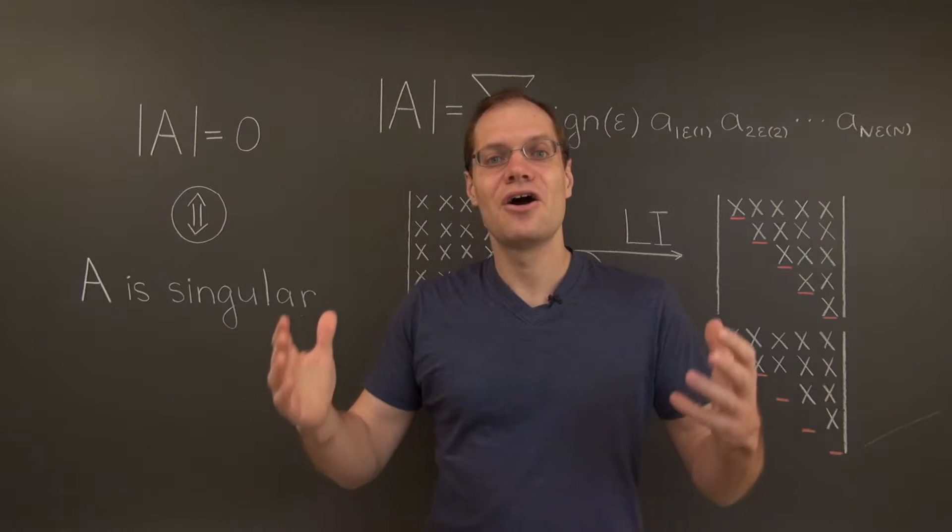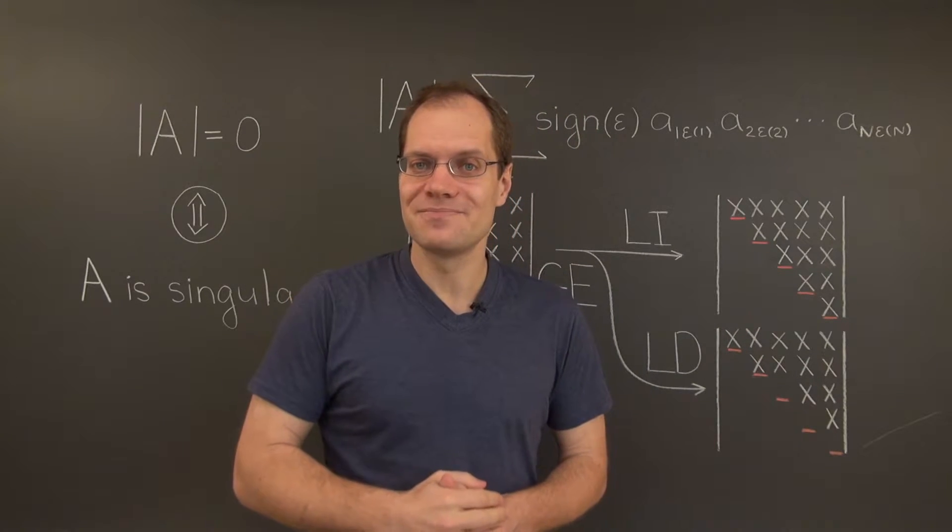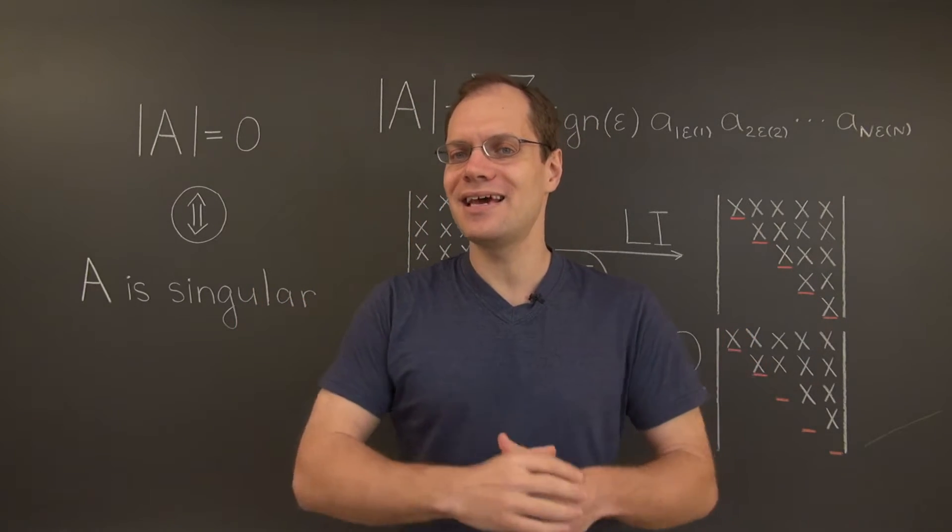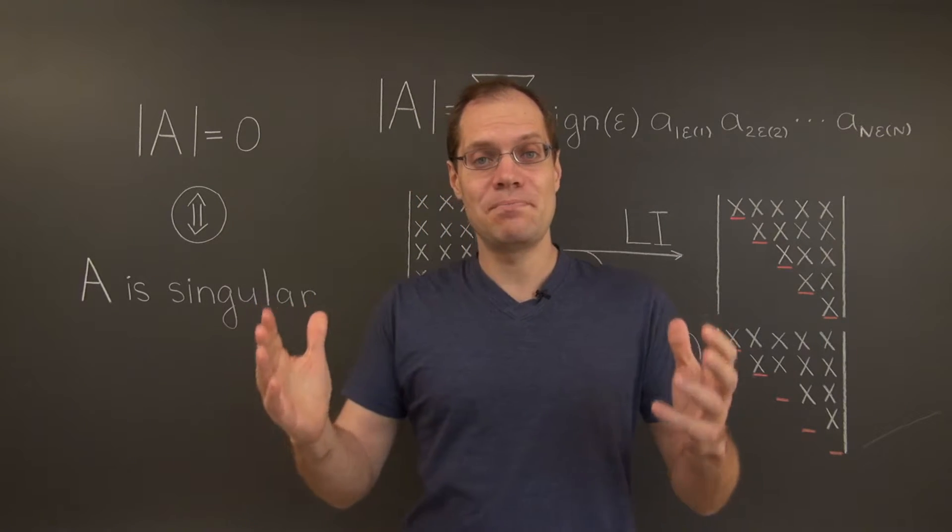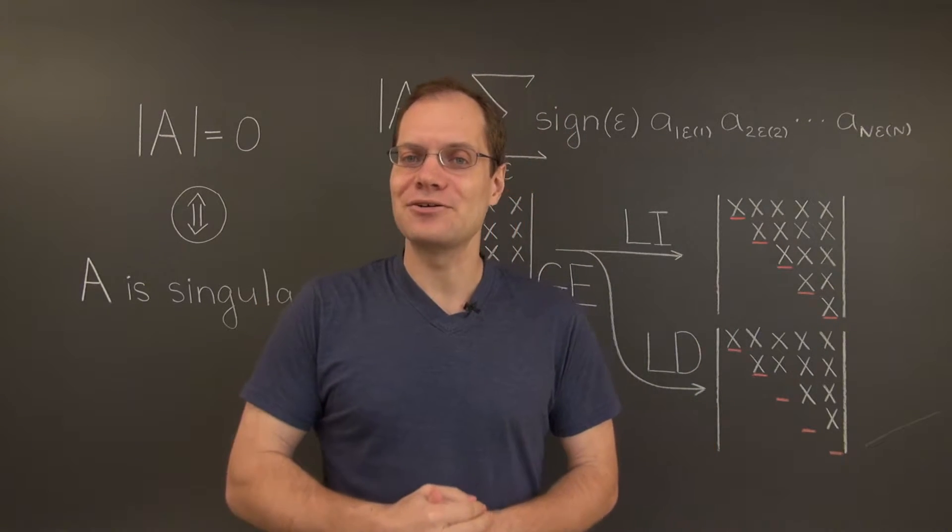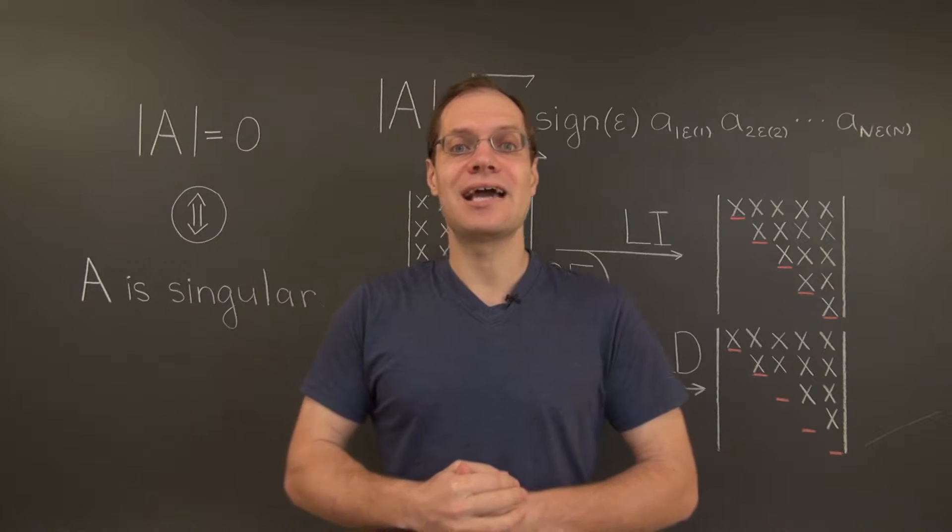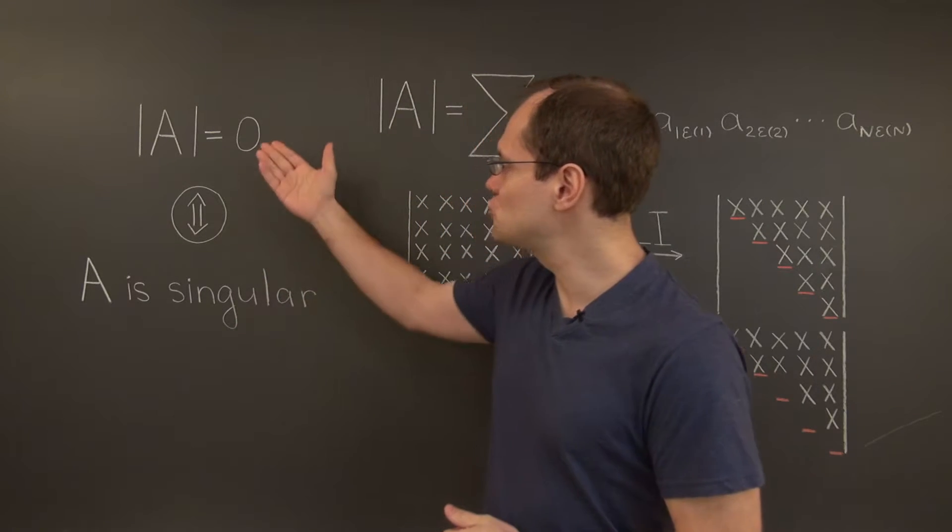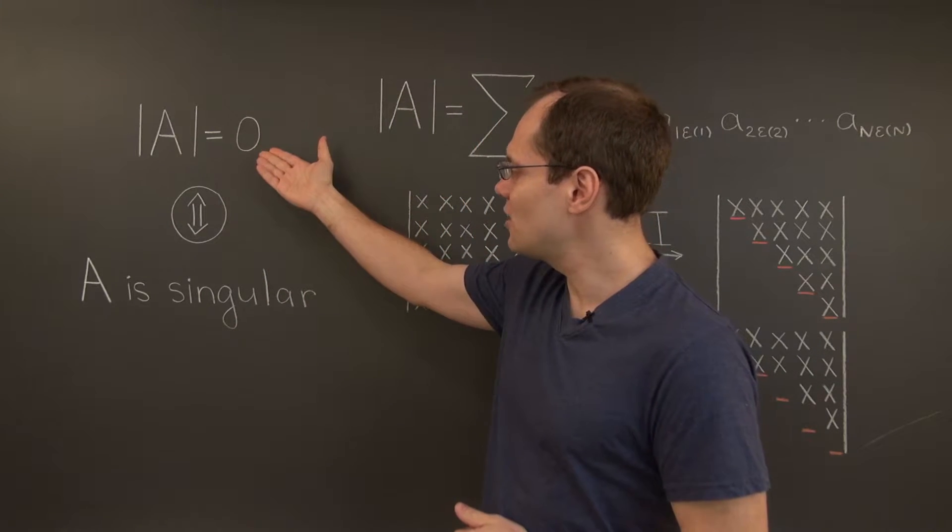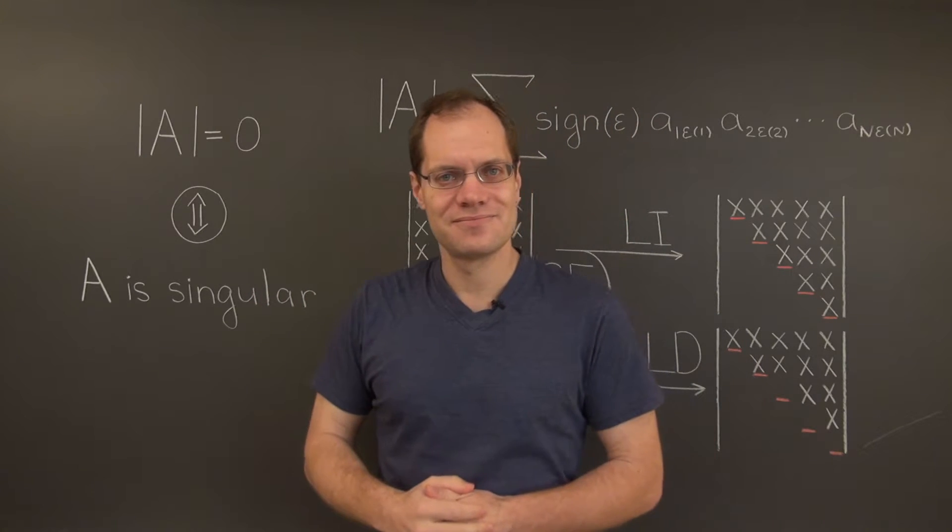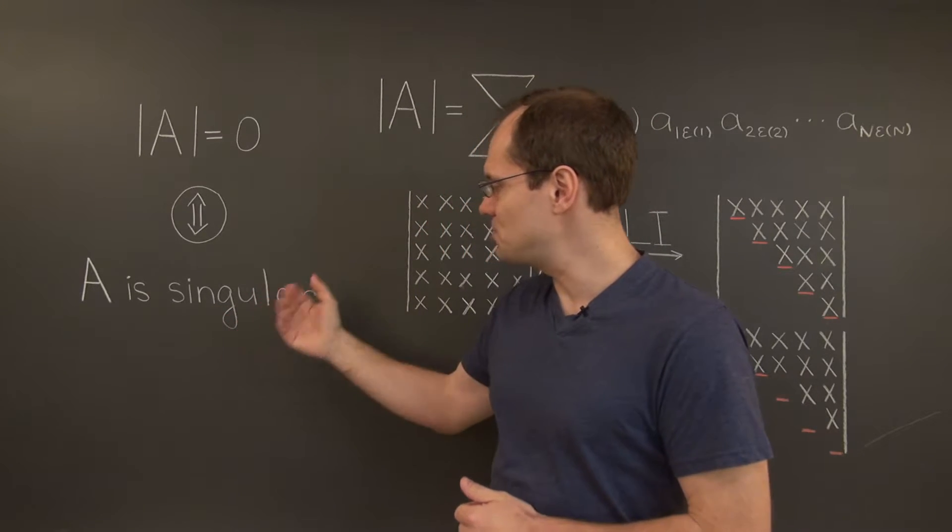And we pretty much already have the proof in hand. We just have to dot the i's. The proof is based on the process of Gaussian elimination, because Gaussian elimination preserves the correctness of each one of these statements. Let's start with the matrix being singular.